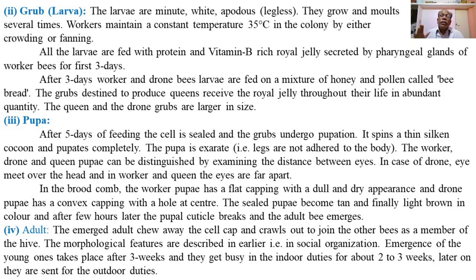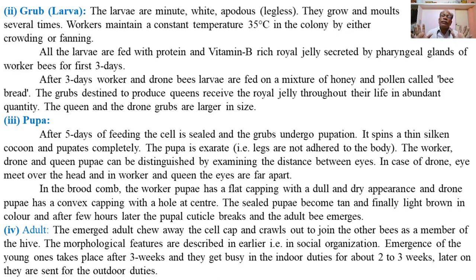After the first three days, worker larvae and drone larvae are fed ordinary food called bee bread, containing pollen, honey, etc. However, if a queen larva is developing in the queen brood cell, it is fed royal jelly throughout the entire larval development. The larval development period is about five to seven days.